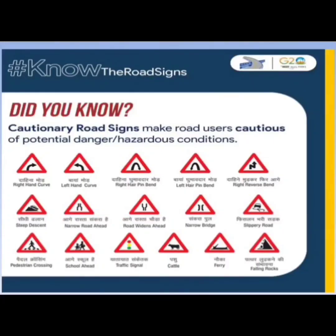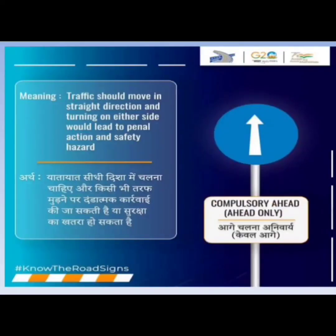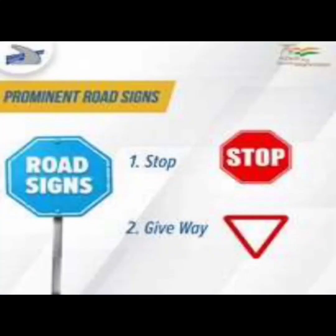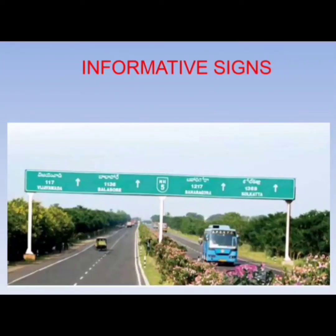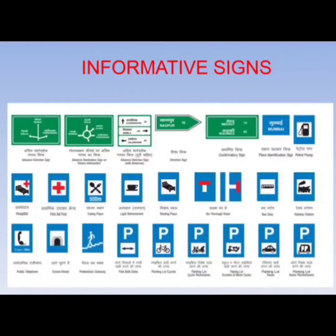Cautionary signs make road users aware of potential dangers or hazardous conditions, such as left turn, right turn, U-turn, and narrowing road. Some prominent exceptional road signs are stop and give way: the stop sign is denoted by a hexagon and give way is denoted by a reverse triangle. Informatory signs give information about destinations, conditions, nearby places, directions, and amenities available nearby.